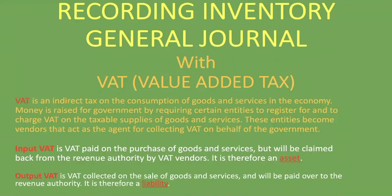Output VAT is VAT collected on the sales of goods and services and will be paid over to the revenue authority — it is therefore a liability. When a customer buys goods from the VAT vendor, the price charged includes VAT. That VAT portion doesn't belong to you; it belongs to the revenue authority, so you still have to pay it over to them. Remember: input VAT is an asset — it's coming in; output VAT is a liability — it goes out.